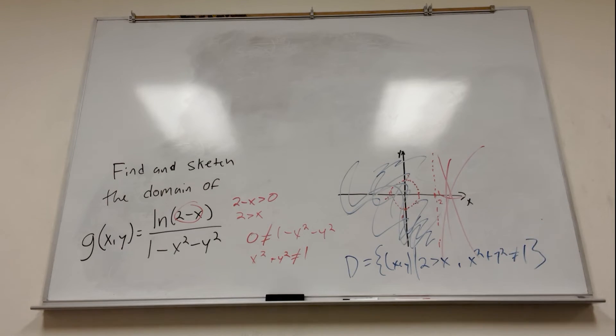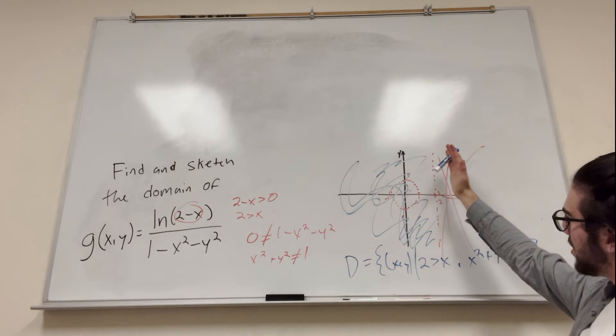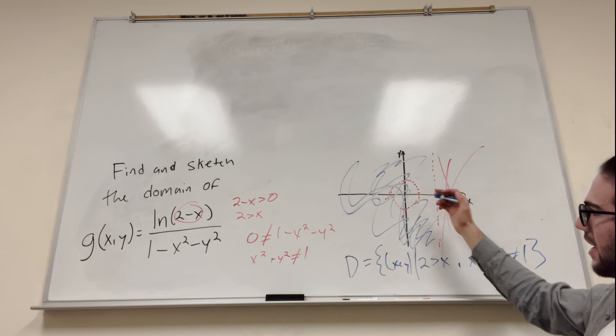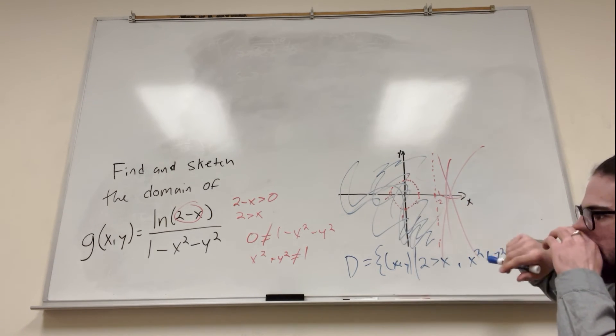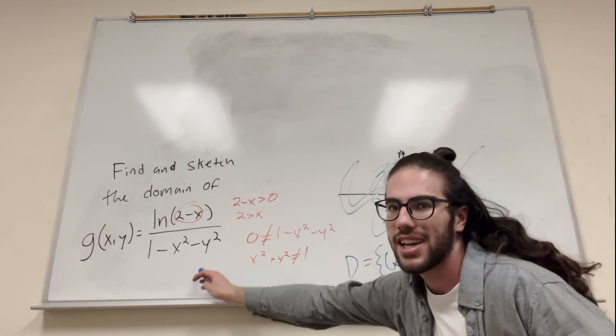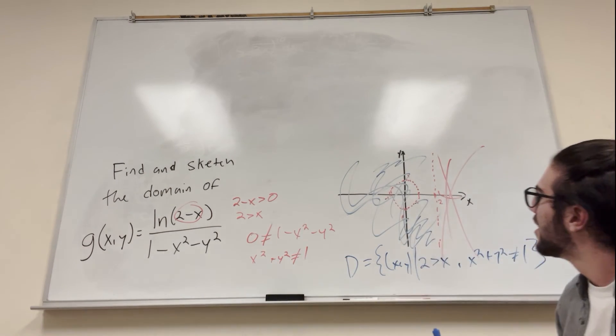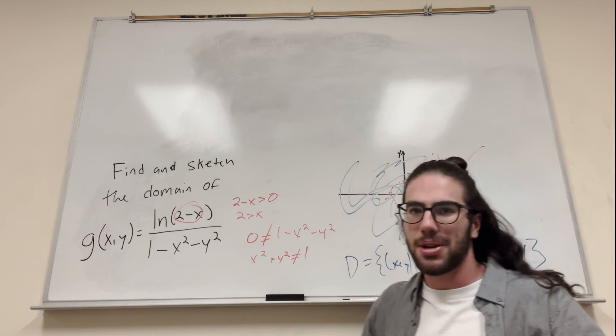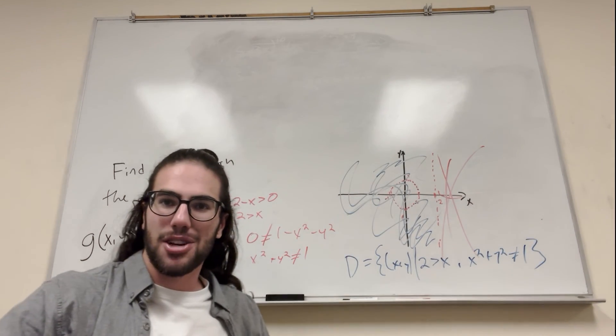I hope you guys get the image of this graph. Basically what I'm saying is it has to be less than 2, x has to be less than 2, so anything over here qualifies. And then it cannot be on this circle, x squared plus y squared equals 1, because we figured that out. If you plug in this, you get 0 on the bottom. It doesn't work. So yeah, that's how you do these problems. Just write things out. I hope you enjoy these problems. Good luck on your calculus homework.